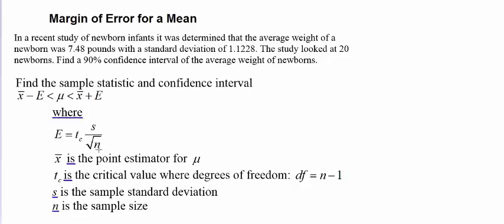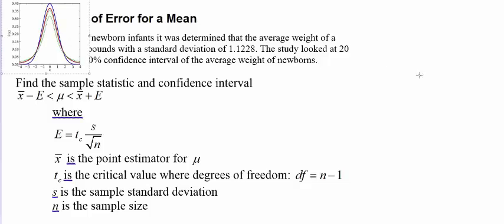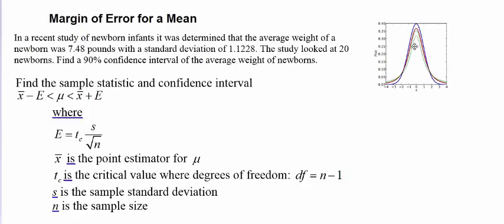T would be your critical value, and it's the critical value for a student t-distribution. That's an alternative to the normal distribution.